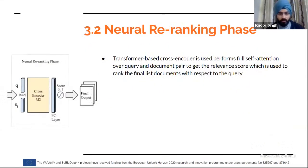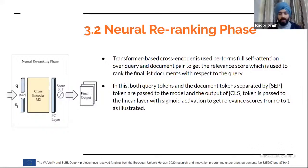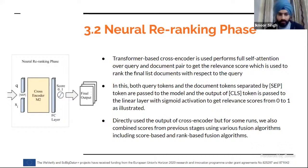Coming to the final phase — the neural re-ranking phase — we use a cross-encoder model to perform full attention over the query and document pair to get the relevance score used to rank the final list of documents. Both the query tokens and sentence tokens are separated by a separator token and passed to the transformer-based model. The output of the CLS token is passed to a linear layer with sigmoid activation to get a relevance score from zero to one. For some runs, we combined scores from previous stages using fusion algorithms including weighted ComSum, RRF, and Borda fusion.